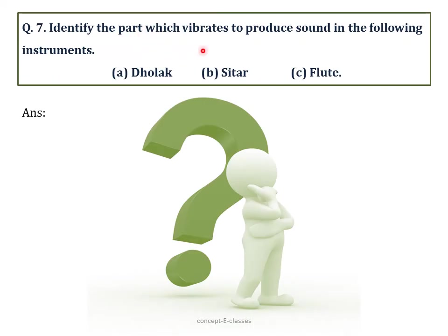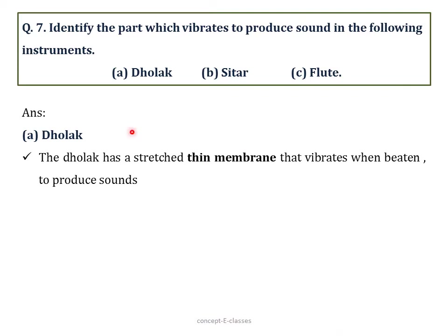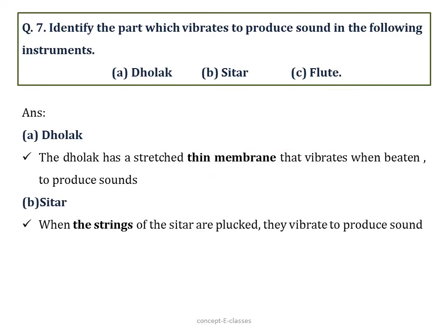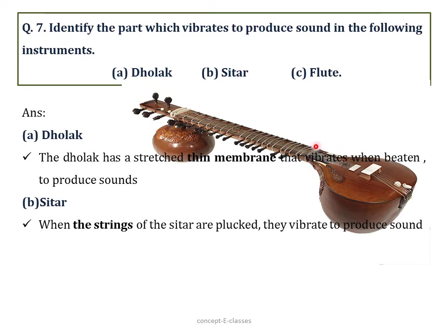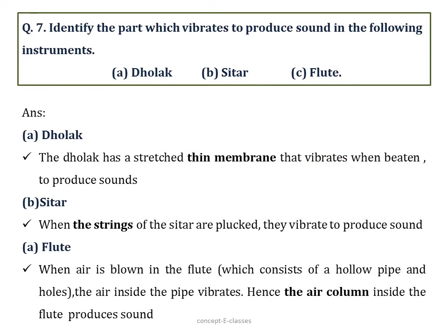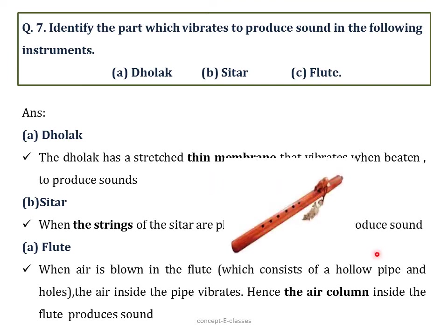Question number 7: Identify the part which vibrates to produce sound in the following musical instruments. (A) Dholak — the thin stretched membrane vibrates when beaten, producing sound. (B) Sitar — the stretched strings vibrate when struck, producing sound. (C) Flute — when air is blown into the hollow pipe, the air column present inside the flute vibrates to produce sound.